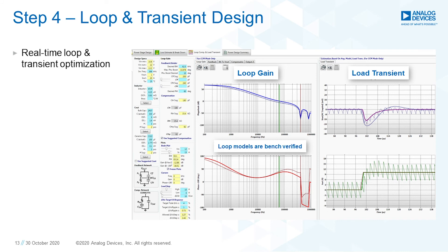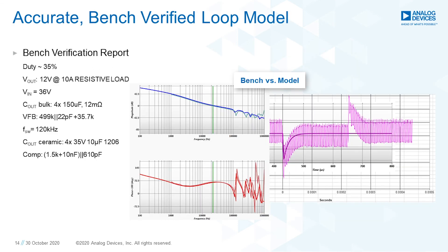The next step is to evaluate the loop gain and transient response of the converter. Using a linearized model of the converter, you can quickly evaluate the Bode plot for phase margin, bandwidth, and gain margin in the frequency domain, and how it affects the load transient response in the time domain. Again, you can quickly optimize the design by trying different component values and seeing their effect on the performance. Every model in the database has been evaluated on the bench before being released to ensure the accuracy of the model.